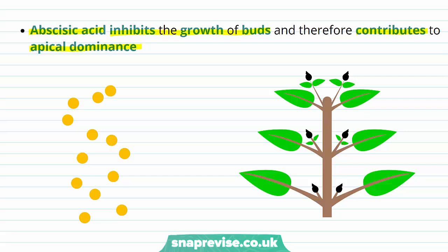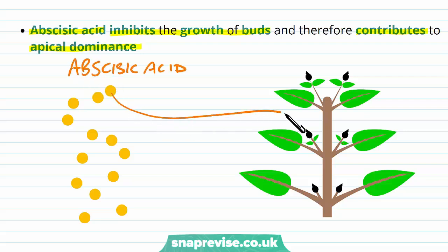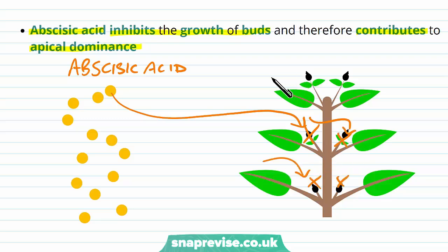The abscisic acid is a hormone that works on the lateral buds to stop them from growing into elongated stems. This means that only the apex of the plant will grow, and this is how we get apical dominance.